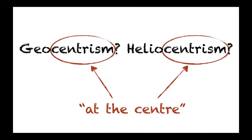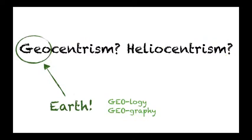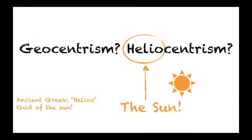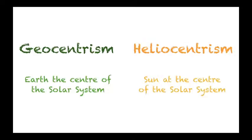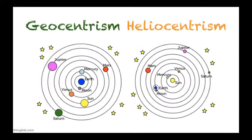Let's break it down. Centrism means 'at the centre.' Geo means 'earth' — think of geology or geography. And helio means 'the sun,' which comes from the ancient Greek Helios, who was the god of the sun. So geocentrism means 'earth at the centre,' and heliocentrism means 'sun at the centre.' Here we're talking about the centre of the solar system.